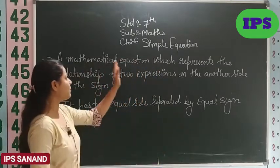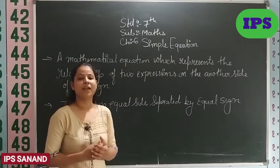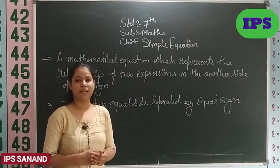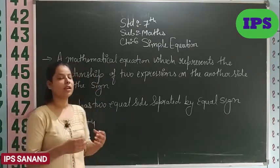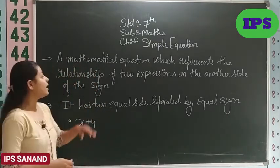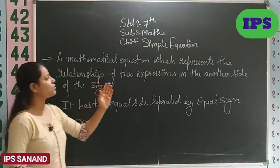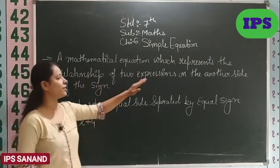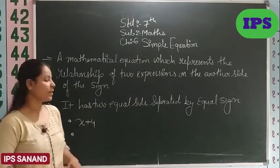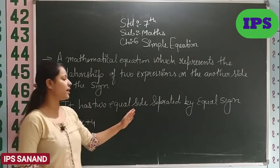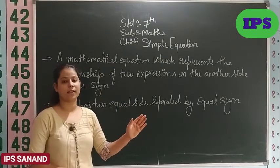In this particular chapter which is chapter number 6, Simple Equations, I would start with telling you the definition. Now, what is Simple Equation? Equation means what? A mathematical equation which represents the relationship of two expressions on another side of the sign. It has two equal sides separated by equal sign.